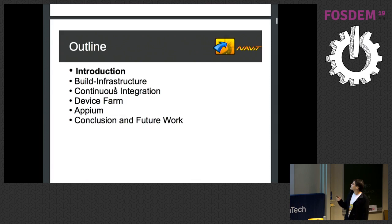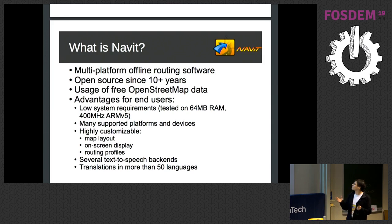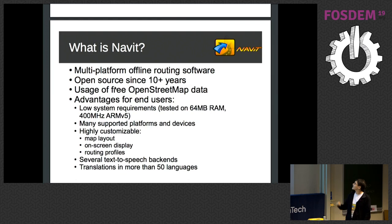What is NAVIT? NAVIT is an open source GPS app — you can think of it a bit like an open source Google Maps. But unlike Google Maps, which is just an Android app, it runs on many different platforms, which I will also show on one of the future slides.